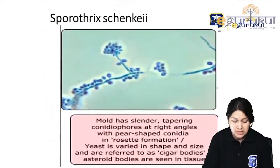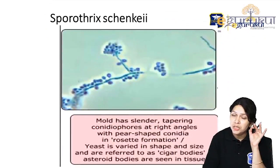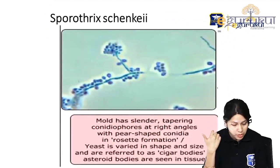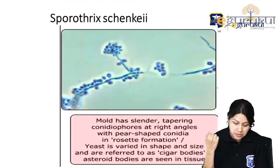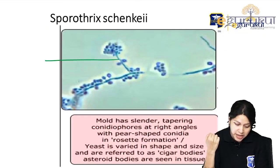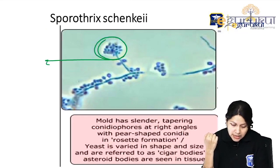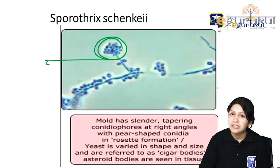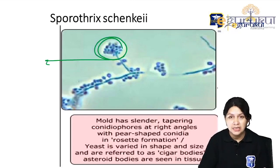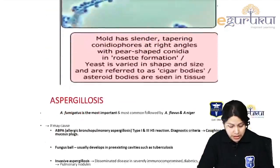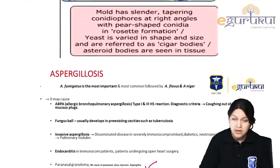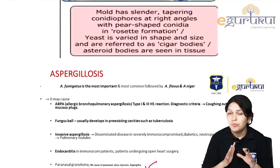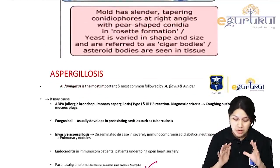Sporothrix schenckii is the only infection acquired by the cutaneous route. In culture, thin hyphae with conidia arranged in a flower-like pattern are seen, and at 37°C the yeast is classically elongated or cigar-shaped. This finishes our topic of dimorphic fungi.